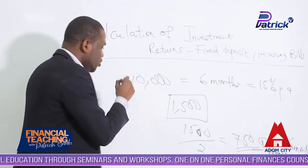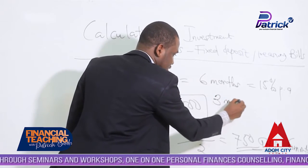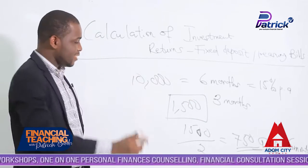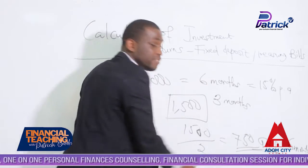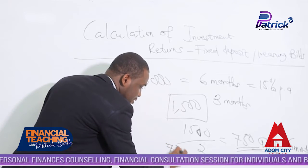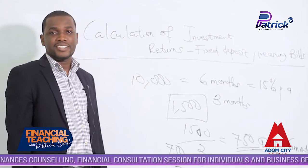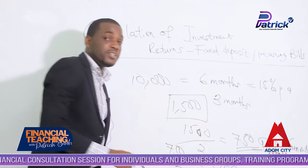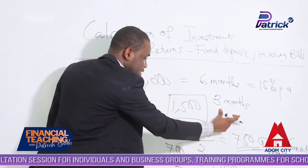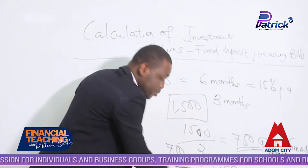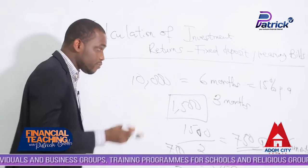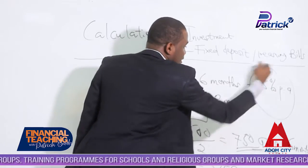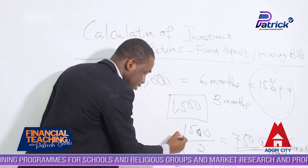Now let's assume you go to the bank again. You want to invest 10,000, but this time you want to do three months. Three months will not give you the same returns as one year. Since six months gives us 750, for three months you divide 750 by two. So if you are investing your 10,000 for three months at 15%, you are going to get 375 Ghana cedis. For six months you get 750 cedis, and for one whole year at 15% you get 1,500.